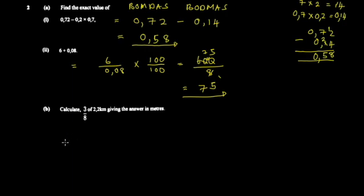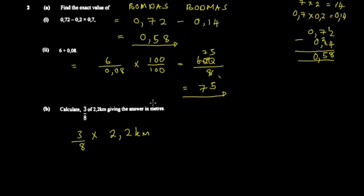The next part asks to find 3/8 of 2.2 kilometers and give the answer in meters. When they say 'of', it's a buzzword indicating multiplication, so it's 3/8 times 2.2 kilometers. Since we want the answer in meters, we add a conversion factor.